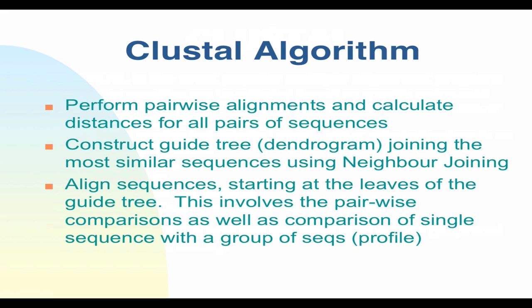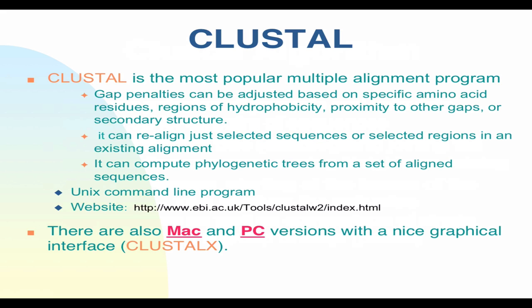ClustalW is available as a Unix command-line program and can be scripted. It's available on several websites, most popularly at EBI in Europe, and there are Mac and PC versions with a graphical interface called ClustalX. There's also a newer version called ClustalOmega. Having it on a server is advantageous when aligning more than a hundred sequences, which can take a long time — some people in anthropology submit jobs to big clusters that can take weeks.